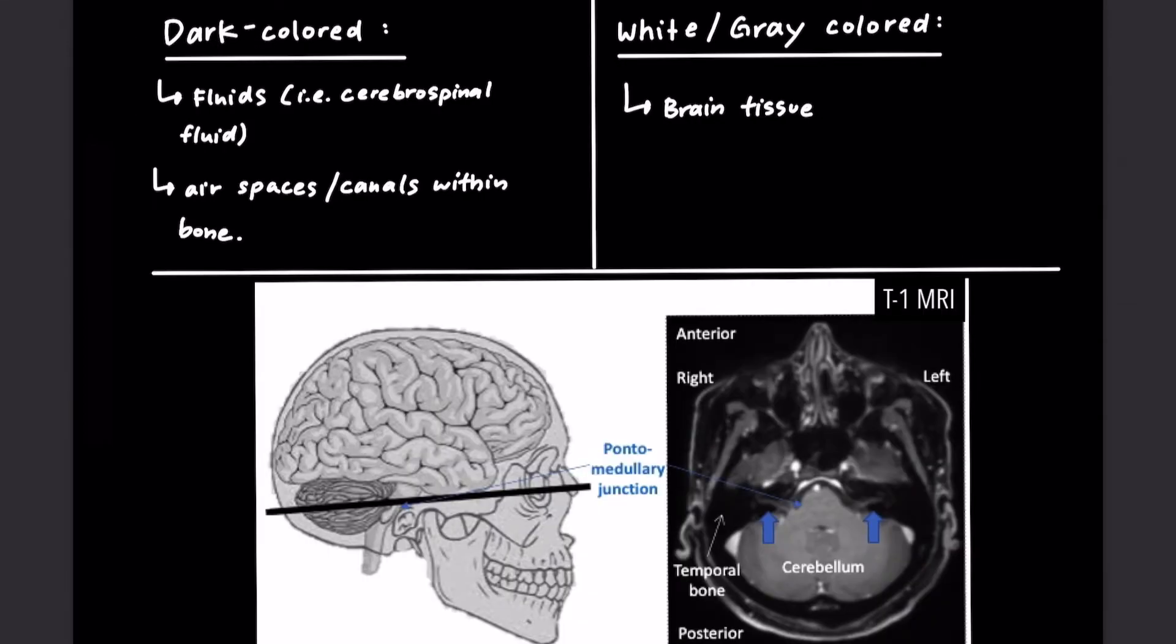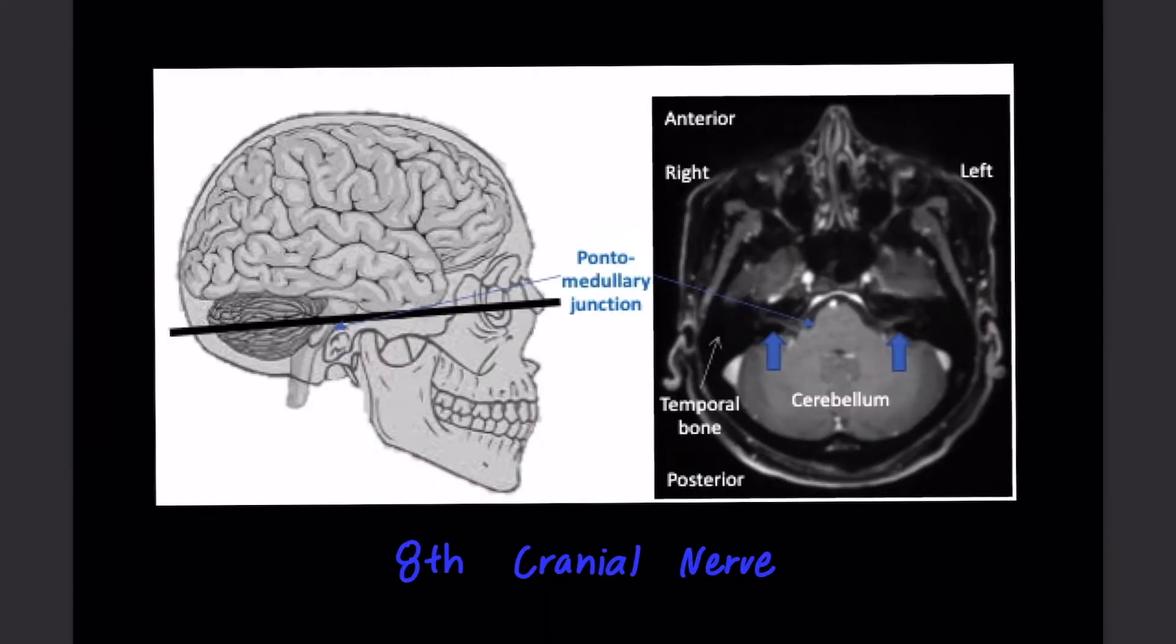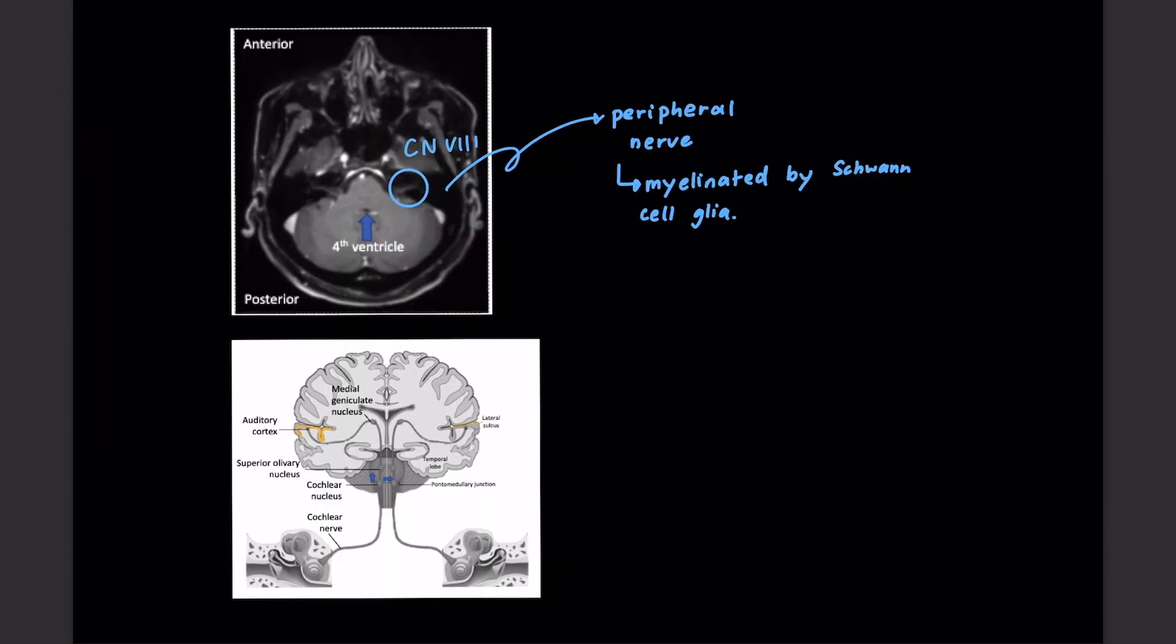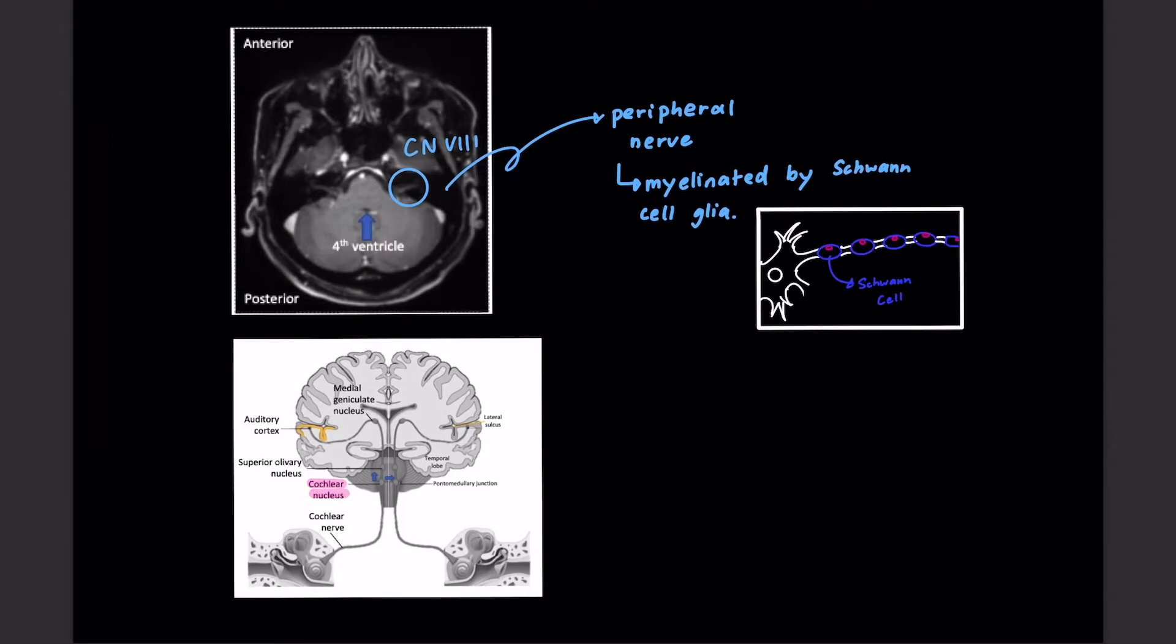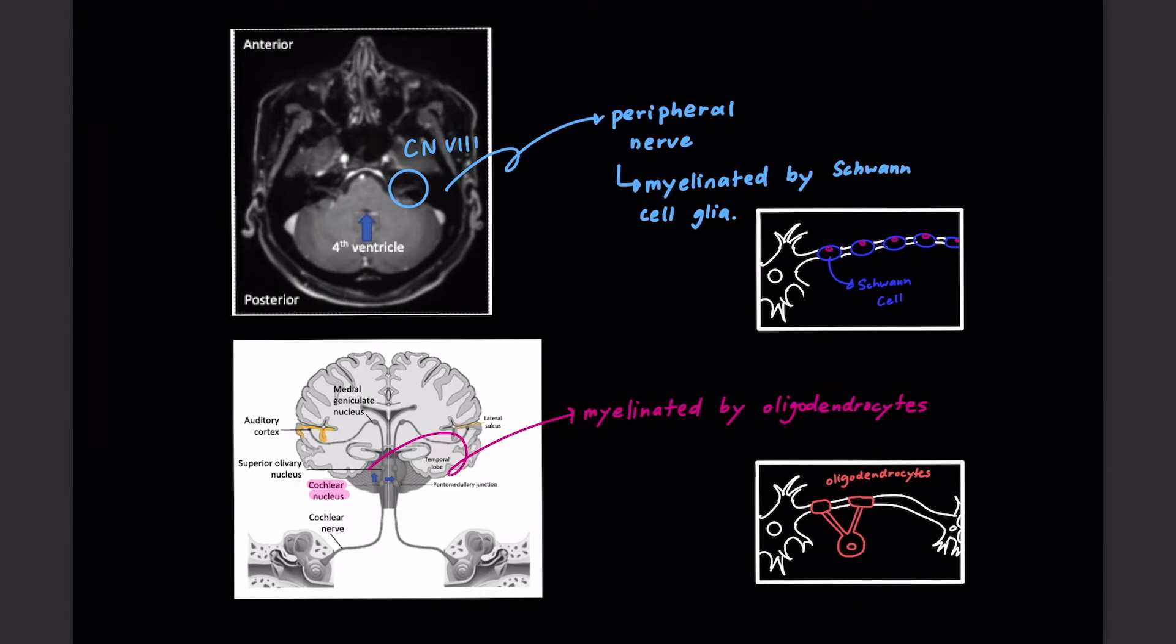This image is taken from a T1-weighted MRI. Fluids like cerebrospinal fluid appear dark, and the brain tissue appears white or gray. Dark areas may also represent air spaces or canals within bone, and here you can see temporal bone air spaces lateral to the cerebellum. In this section through the pontomedullary junction, the eighth cranial nerve can be observed on either side of the brainstem, which are indicated by the thick blue arrows. This is a peripheral nerve, so it is myelinated by Schwann cell glia, whereas the neurons coming from the cochlear nucleus that ascend up the brainstem are myelinated by central nervous system myelinating cells called oligodendrocytes.